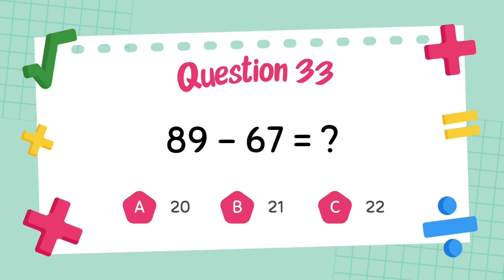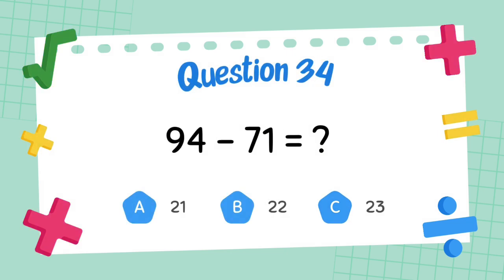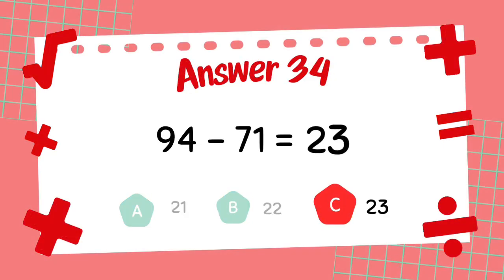What is 94 minus 71? The answer is 22. What is 94 minus 71? The answer is 21.